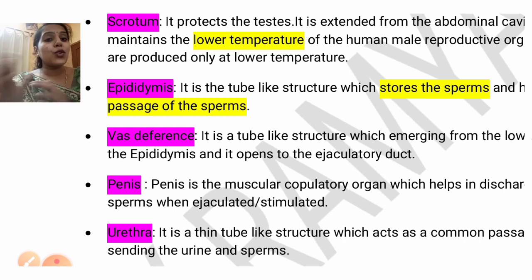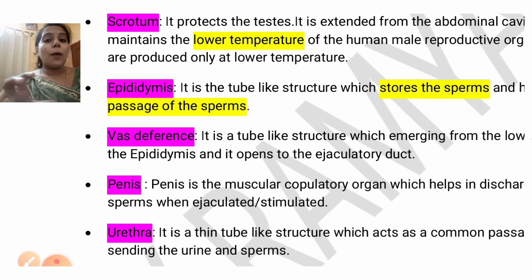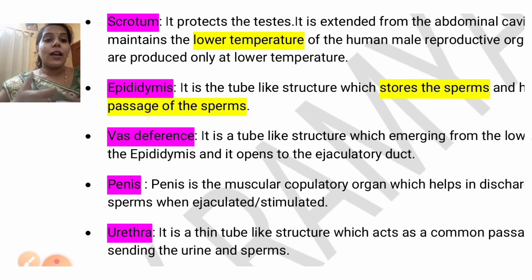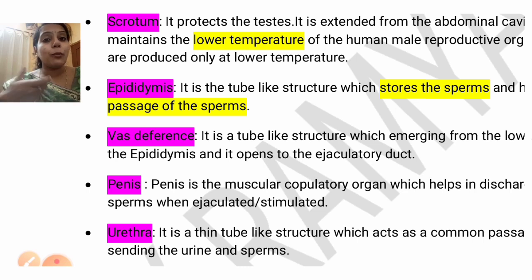The penis is a muscular copulatory organ. It will extend and perform copulation — forward and backward movement — and it will help in discharging the sperm. That muscular organ will help in ejaculating the sperms.